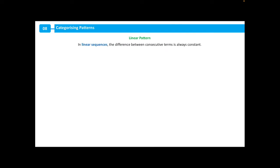In a linear sequence, the difference between consecutive terms is always constant. This means that we have a common difference between our terms. For example, if I have the sequence 3, 7, 11 and 15, the difference between these terms is a constant value. We are adding on plus 4 each time.